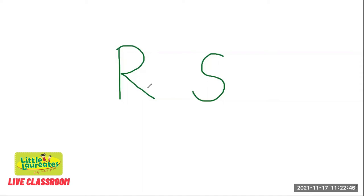R. R is for Racins. Radish. And after the letter R — what letter comes after R? R ki baad wala letter? S. S is S. In the book, we have done U before S. So R says R and S is S.